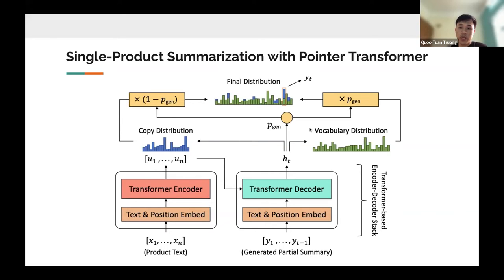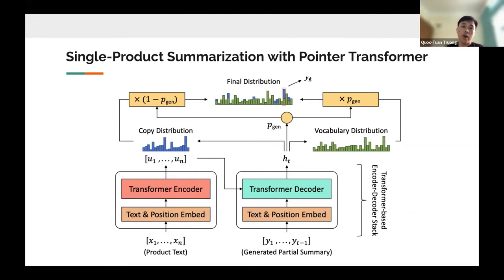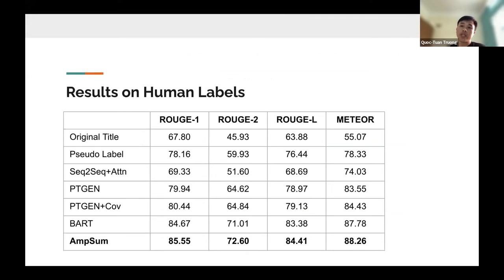By combining the vocabulary distribution and the copy distribution through a gated mechanism, we get the final distribution over all words we can generate. The model generates the next word iteratively until it reaches the end. That is the core idea of the Pointer Transformer block for generating a summary for each product.